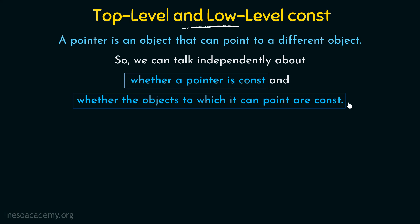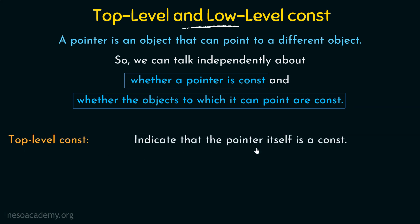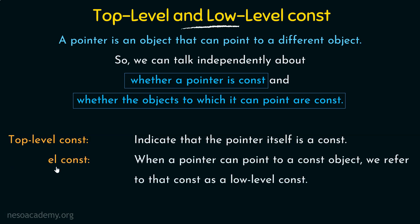In the previous lecture we saw that a pointer can be a constant itself, and also the object to which the pointer points can be a constant. We can talk about these two things independently in case of pointers. Top-level constants indicate that the pointer itself is a constant — the const keywords used to specify that a pointer is a constant by itself are known as top-level constants. And low-level constants are when a pointer can point to a constant object; we refer to that constant as a low-level constant.